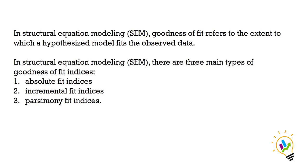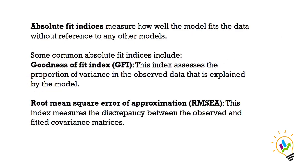In structural equation modeling, there are three main types of goodness of fit indices: number one, absolute fit indices; number two, incremental fit indices; and number three, parsimony fit indices. The first one — absolute fit indices — measures how well the model fits the data without reference to any other model.